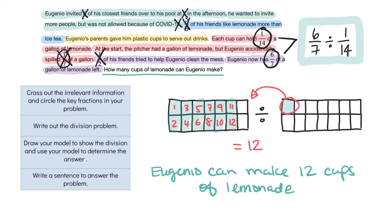And there we have it. So when we're solving our word problems, it's really helpful to do all of these steps: cross out irrelevant information and circle the key fractions, write out the division problem, use our model to show the division and get our answer, and then write a sentence to actually answer the problem. Those are our steps to help us solve word problems.